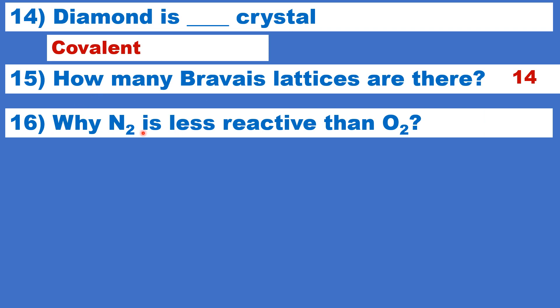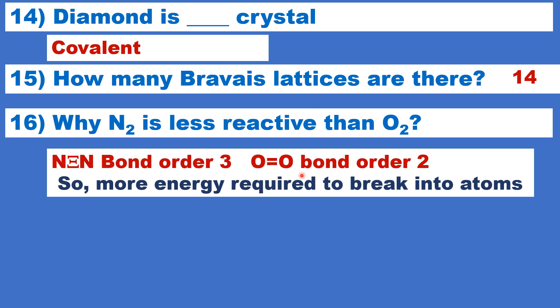Why nitrogen is less reactive than oxygen? It is because nitrogen, it has bond order three, triple bond. Oxygen, double bond. So, more energy is required to break this bond. Therefore, nitrogen is very less reactive and most inert than oxygen.